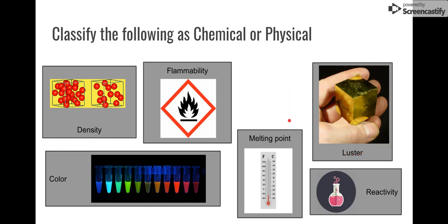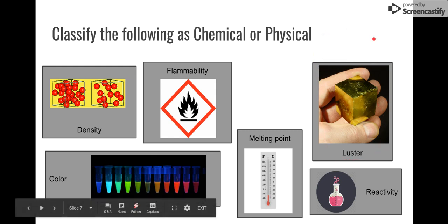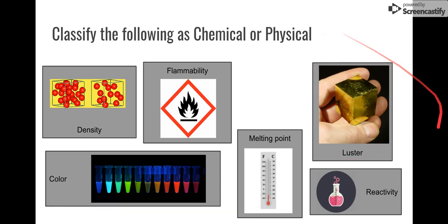Luster. So luster represents the shininess of an object. That's a physical property. So if we change the luster, like if we scratch off the shininess and make it really dull, that's a physical change. If we scratch it off, we're not changing the chemistry of the substance. We are just changing the physical appearance of the substance.